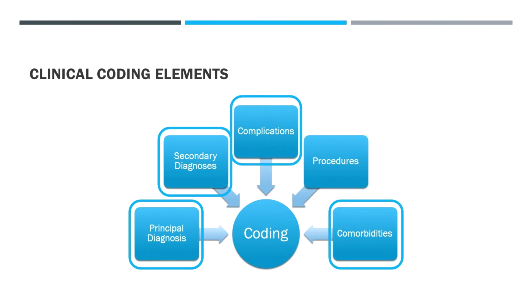Just to revisit some of the principles of coding in case you need a refresher: coding for each admission is based on the principal diagnosis that gives us a diagnostic related group or DRG. Within that DRG, things like complications, secondary diagnoses, or comorbidities and their influence on management and diagnosis will then add complexity to give it appropriate complexity for that DRG and diagnosis.